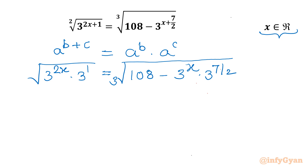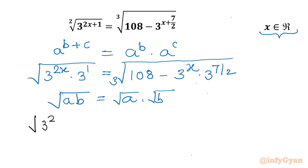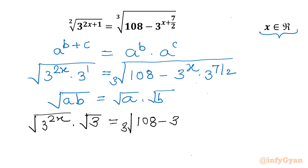Now I will write another property from Radicals or Surds. Square root of ab, we can write as square root a times square root b. So on the LHS I will be writing square root of 3 power 2x, times square root 3. On the right hand side I will be writing cube root of 108 minus 3 power x times 3 power 7 by 2.